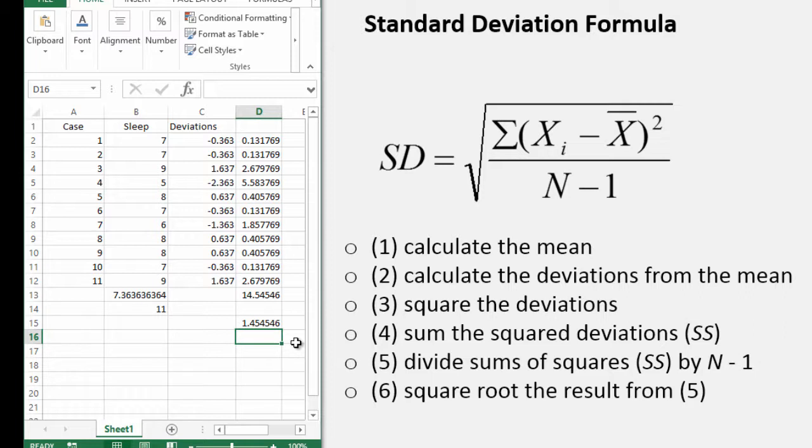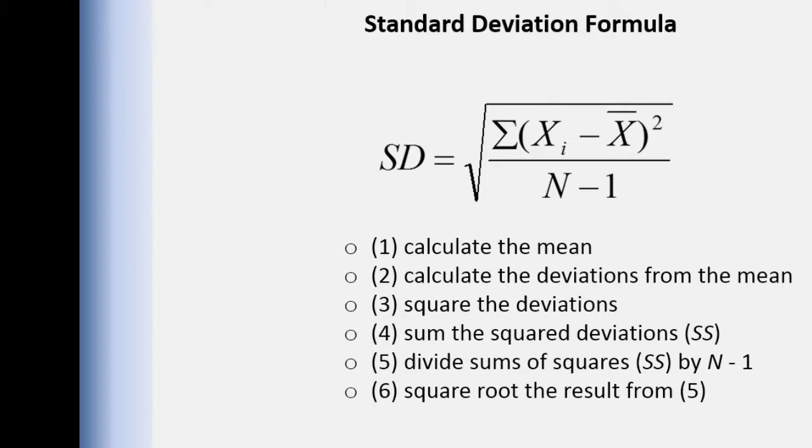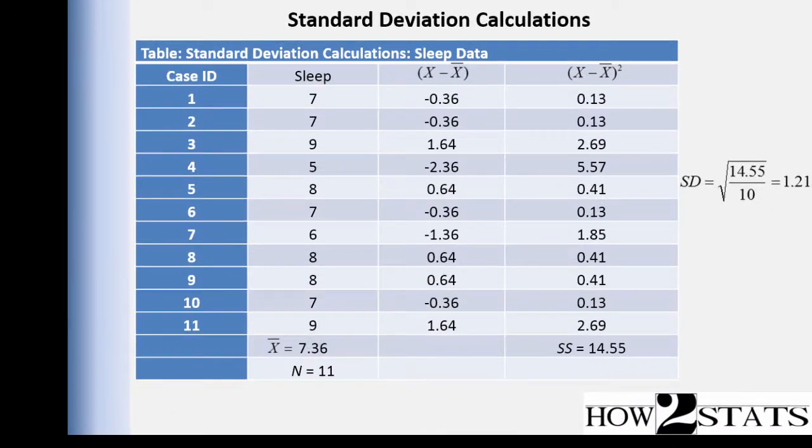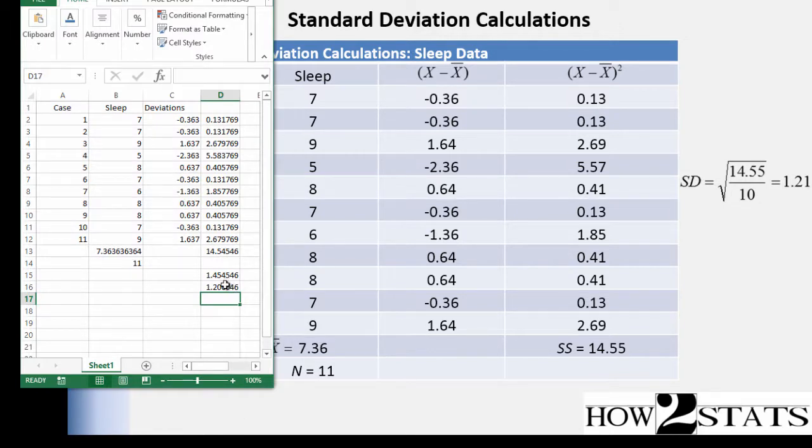And now I need the square root of that value to get the standard deviation. So square root d15 rather. And that should give me the standard deviation I obtained in the previous slide. Standard deviation of 1.21 and the standard deviation rounded is equal to 1.21.